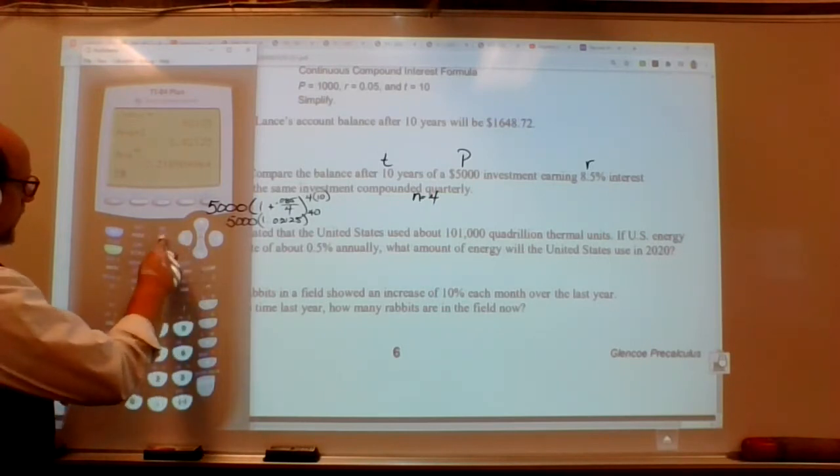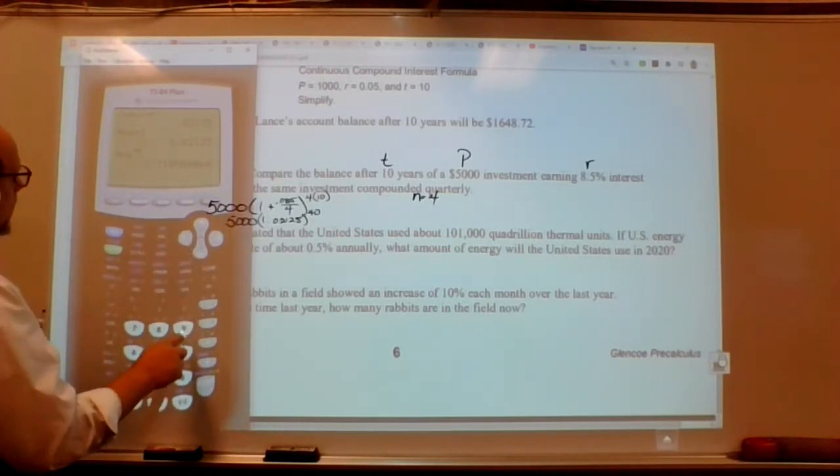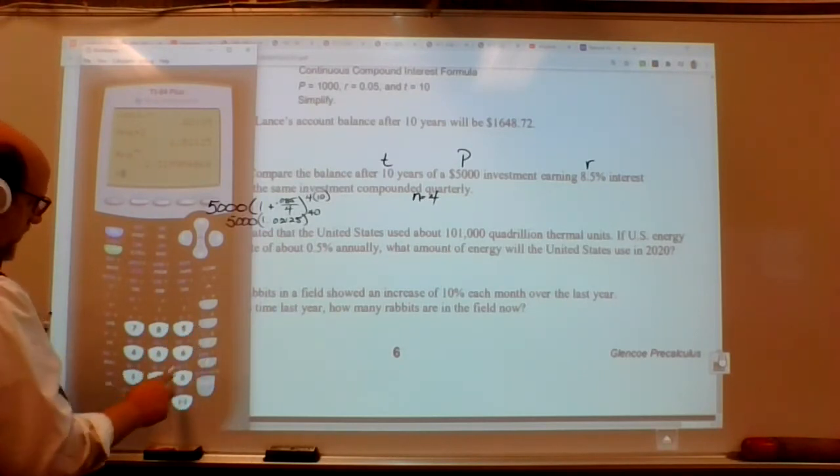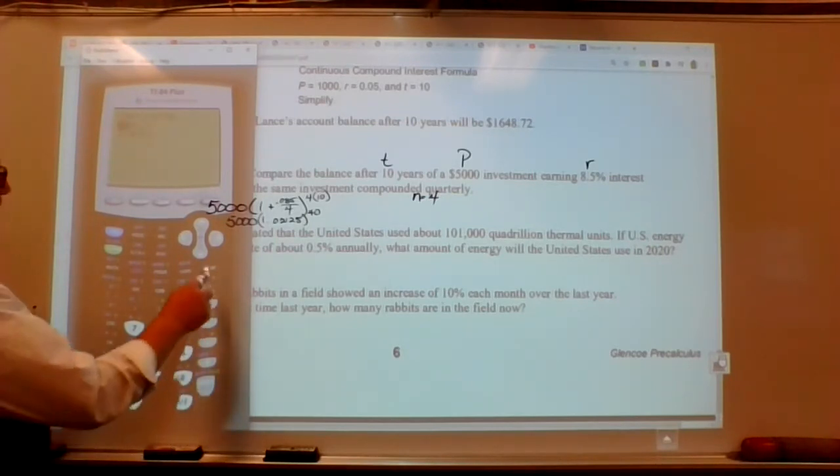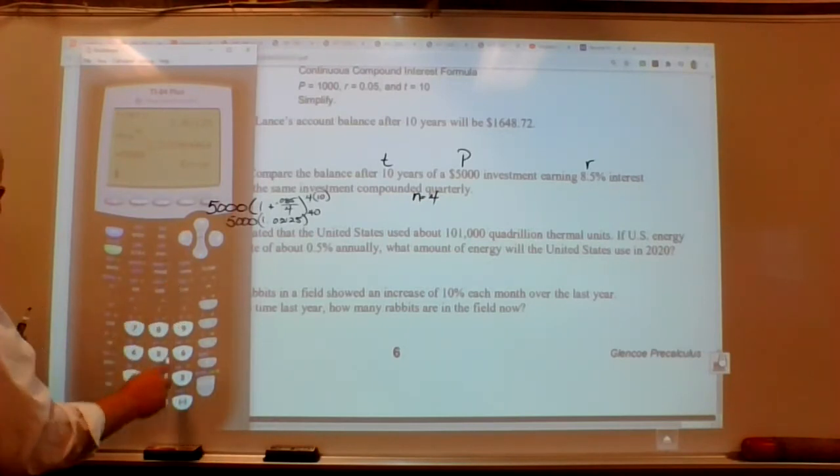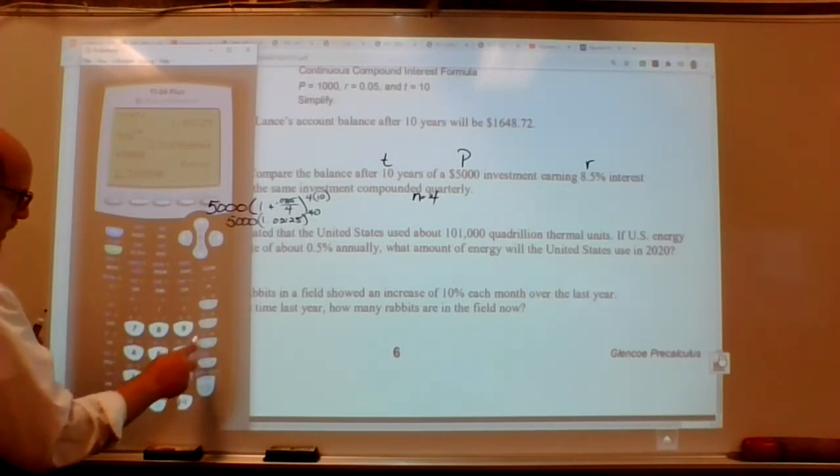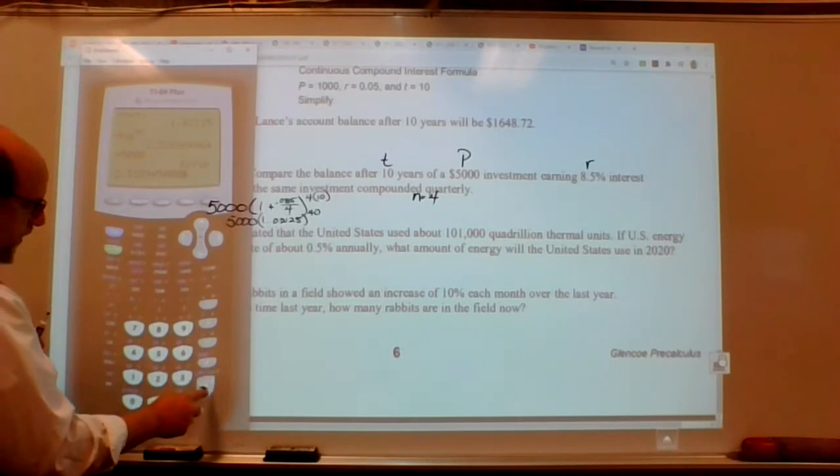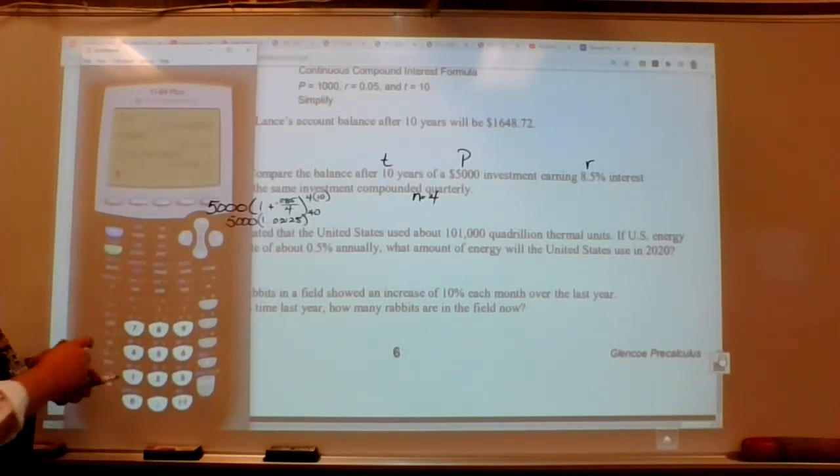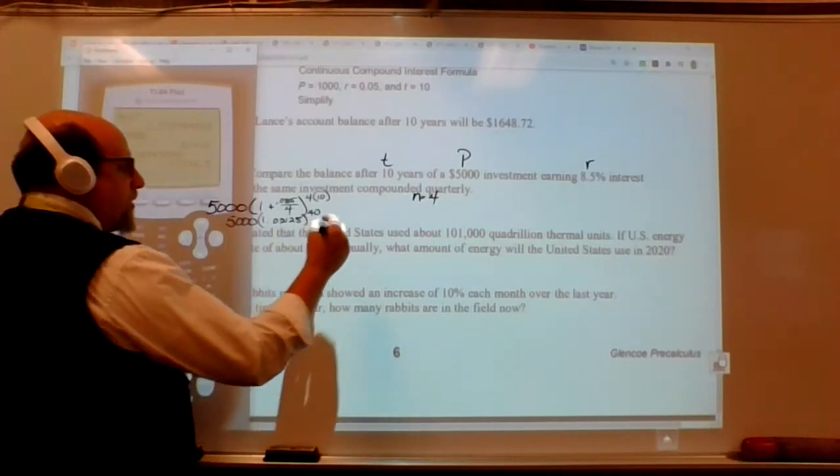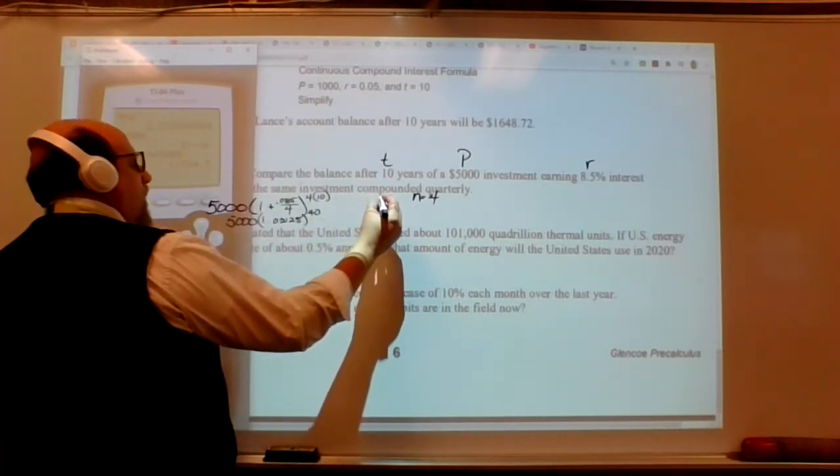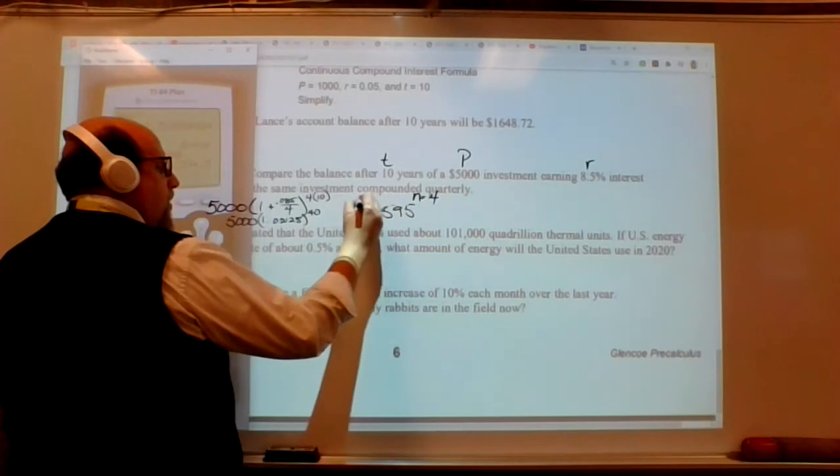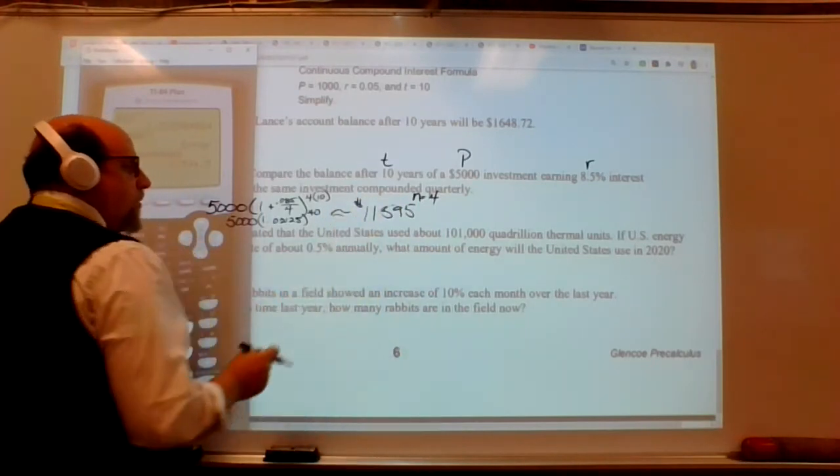Clear that out. I want to do 0.085, divided by 4. Enter. Plus 1. That's me cheating. So this is 0.02125. And I already know that it's to the 40th power, $5,000. So I'm going to raise that to the 40th power. Give myself an answer. This is just me cheating. And then multiply by 5,000. Let me delete that. Delete. And then I'm going to say, the answer times 5,000.